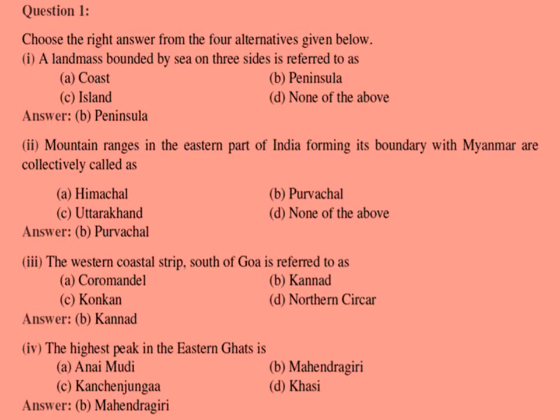Choose the right answer from the 4 alternatives given below. First: a landmass bounded by sea on three sides is referred to as — and the answer is Peninsula.